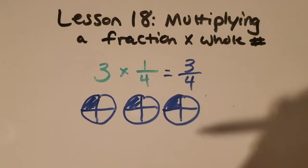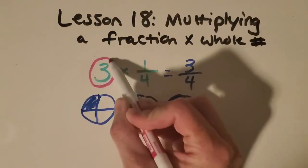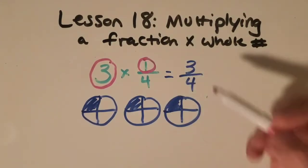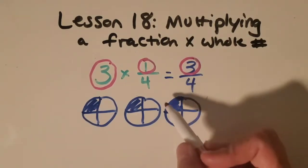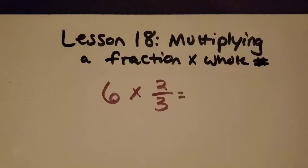So I'm noticing that if I just take the whole number, three, and multiply it by the numerator, one, I get the numerator. And then I just keep the denominator the same.